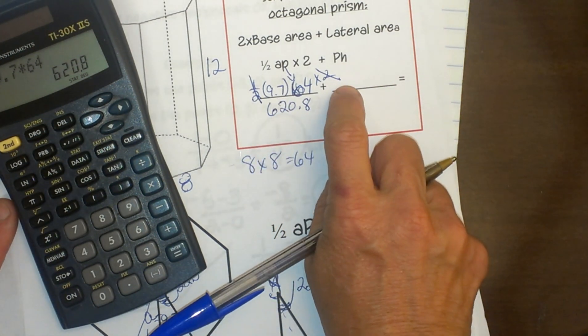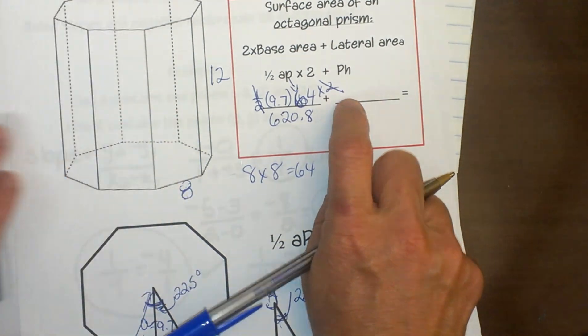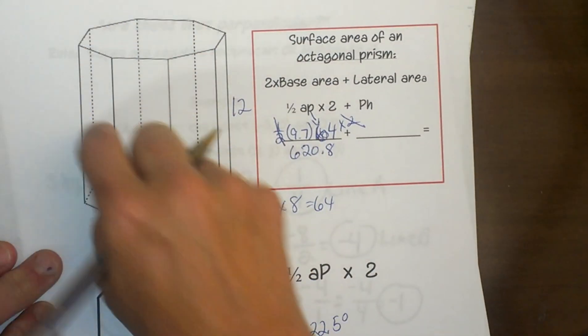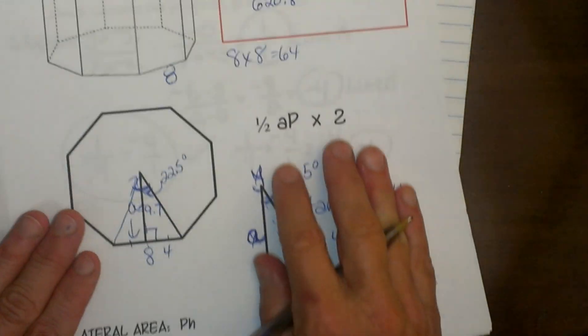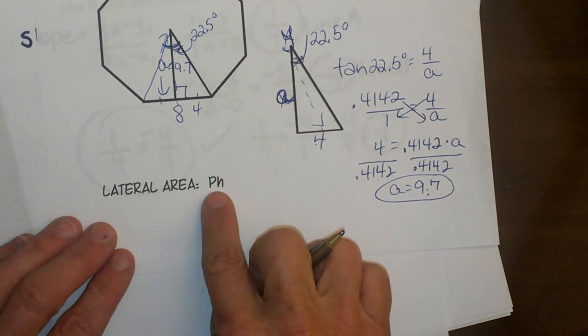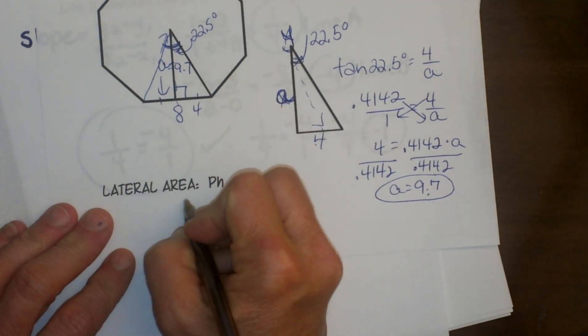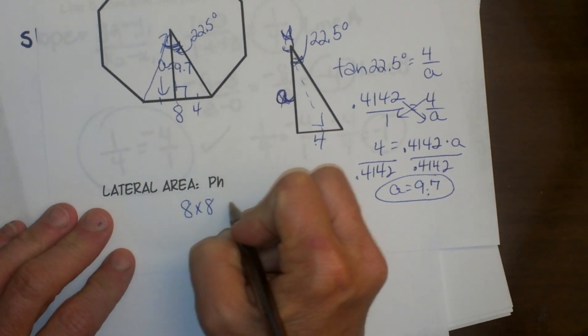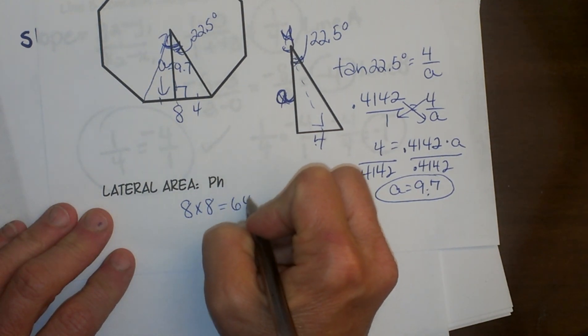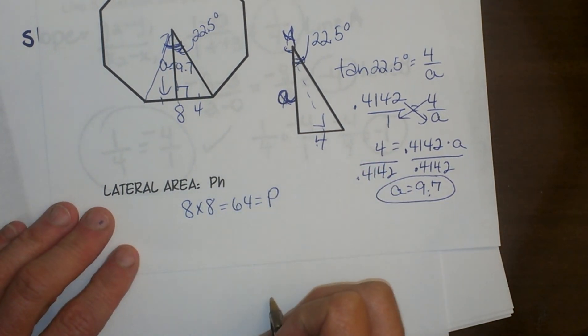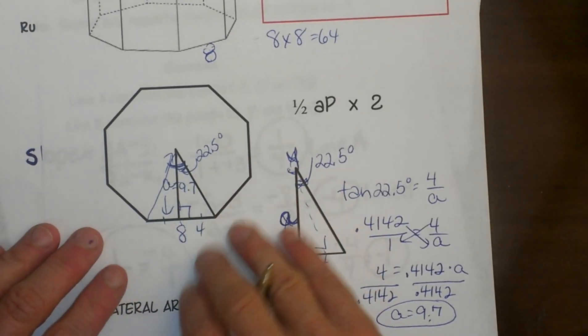Okay, now I need to get my lateral area. And that is that side when I opened up that piece of paper that gave me my lateral area. So what is the formula? It is the perimeter times the height. We just figured out the perimeter. We had 8 sides and they measured 8. So my perimeter is 64.